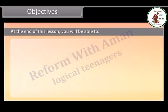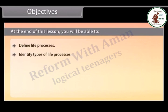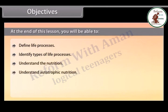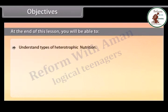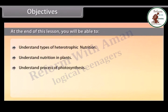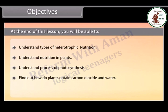At the end of this lesson you will be able to: define life processes; identify types of life processes; understand nutrition, autotrophic nutrition, and heterotrophic nutrition; find the types of heterotrophic nutrition; understand nutrition in plants and the process of photosynthesis; find out how plants obtain carbon dioxide and water; and understand the significance of photosynthesis.